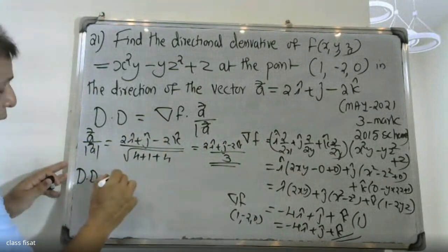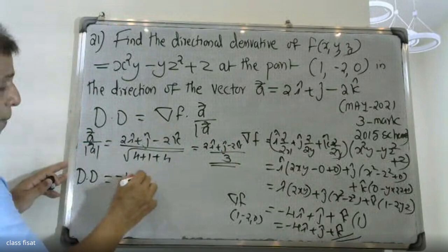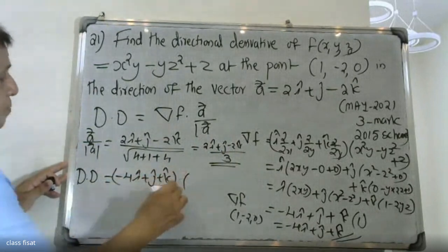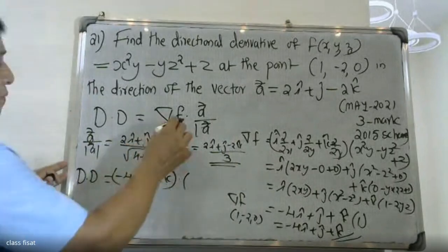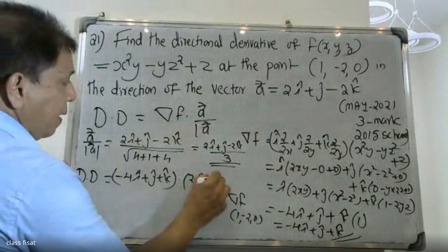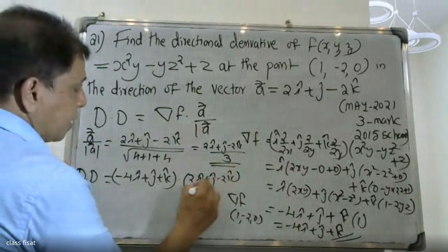Now take the dot product: (-4i + j + k) dot (2i + j - 2k)/3.